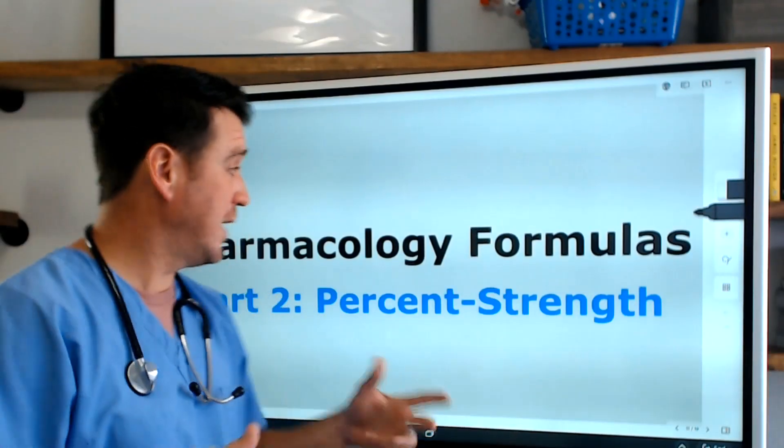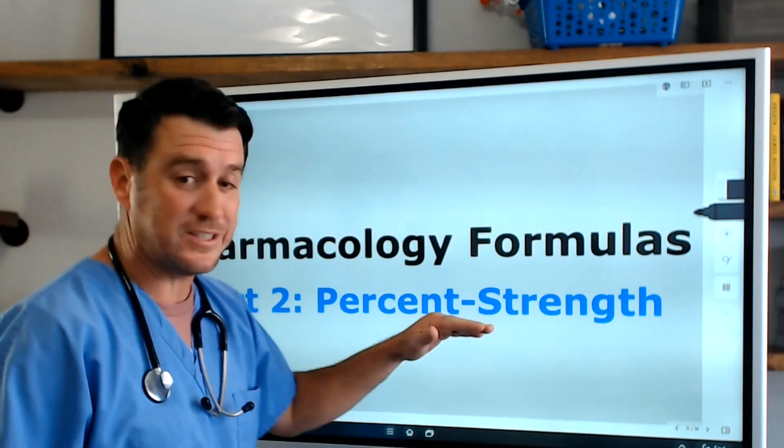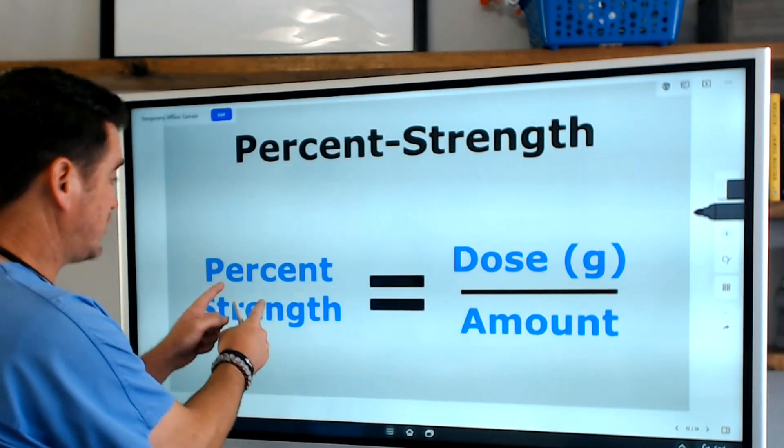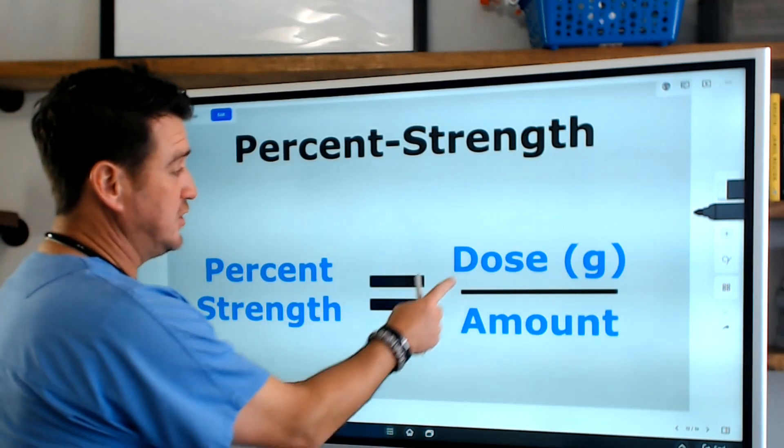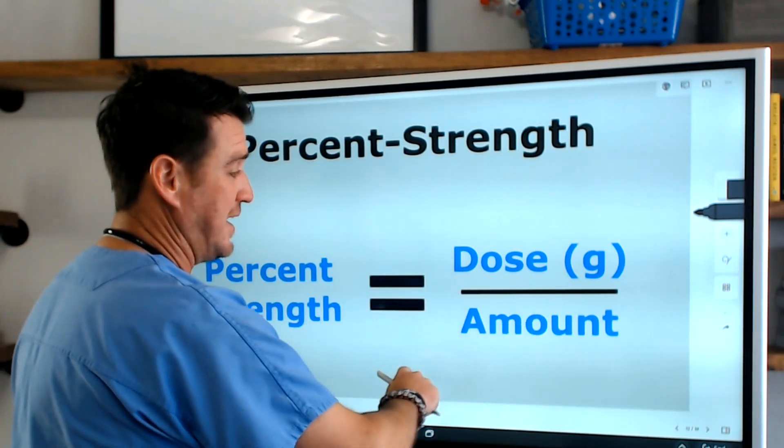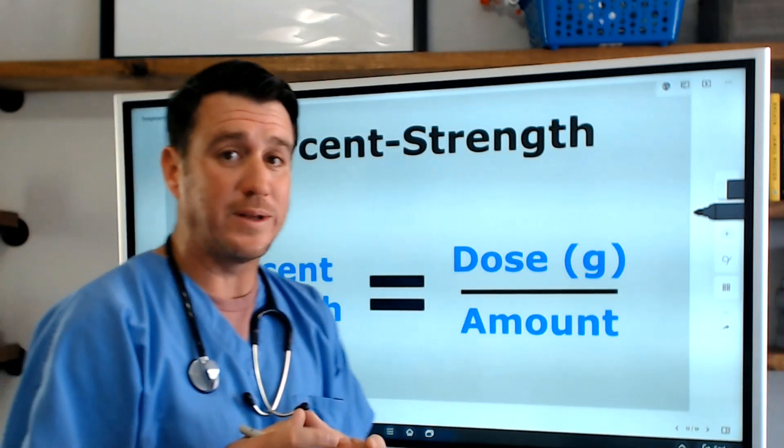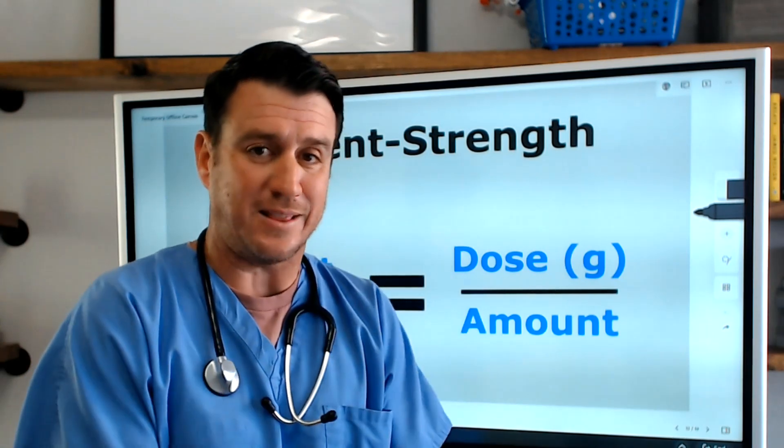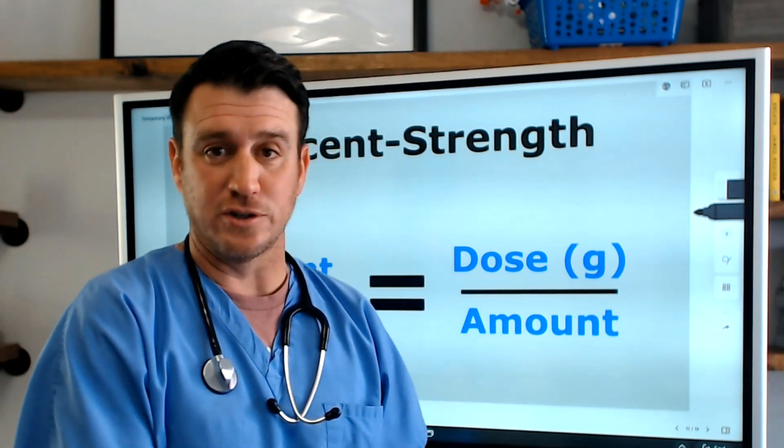In this video we're talking about the percent strength formula. Here's what it looks like: Percent strength equals dose divided by amount given. This is going to give you an indication of the strength of the medication that you're delivering.